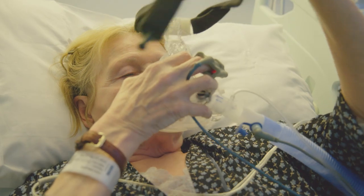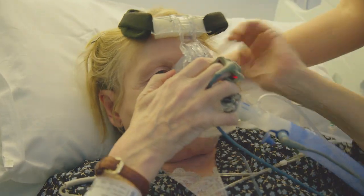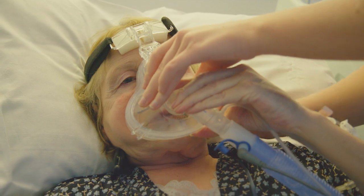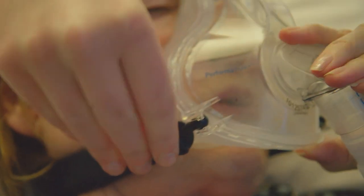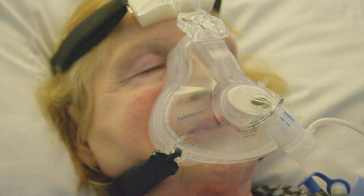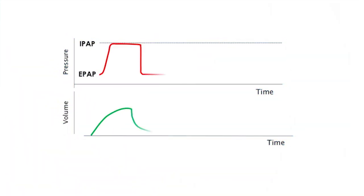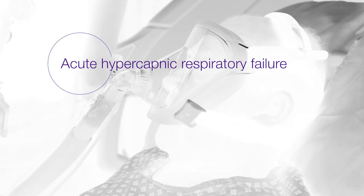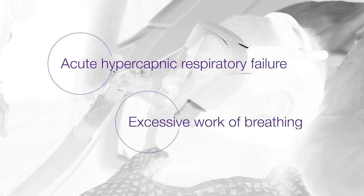NIV works to improve your gas exchange. There are two main settings: the first being your IPAP, or Inspiratory Positive Airway Pressure, and the second being your EPAP, the Expiratory Positive Airway Pressure. Your IPAP aims to improve hypercapnia, and your EPAP improves oxygenation by increasing recruitment and improving lung compliance. Therefore, non-invasive ventilation is used in the treatment of acute hypercapnic respiratory failure or those with excessive work of breathing. It is important to identify the clinical indication for using NIV, as if used inappropriately it can make the clinical problem worse.